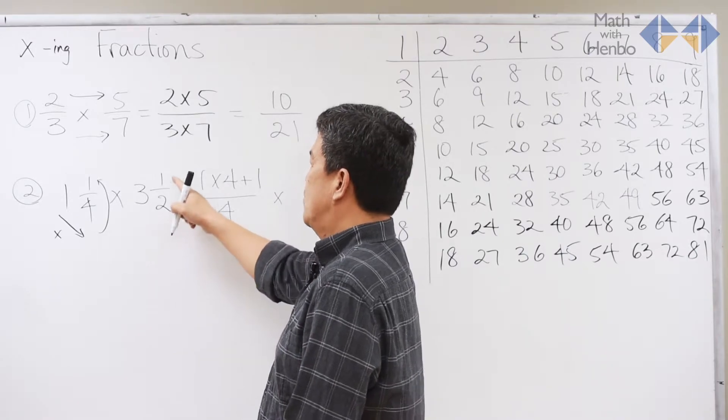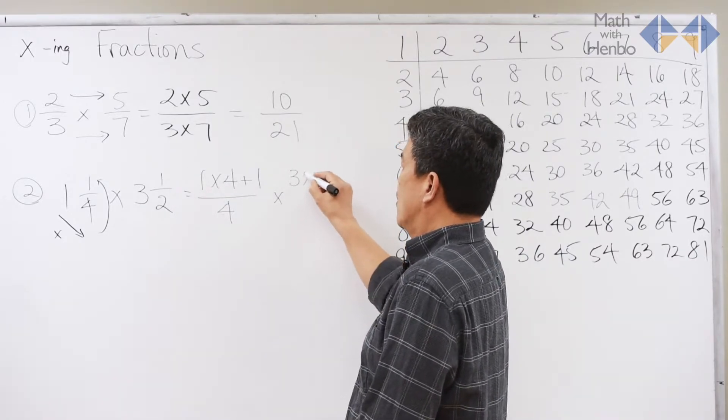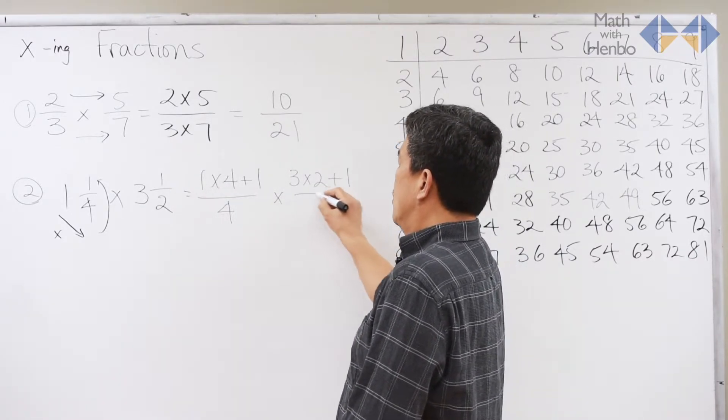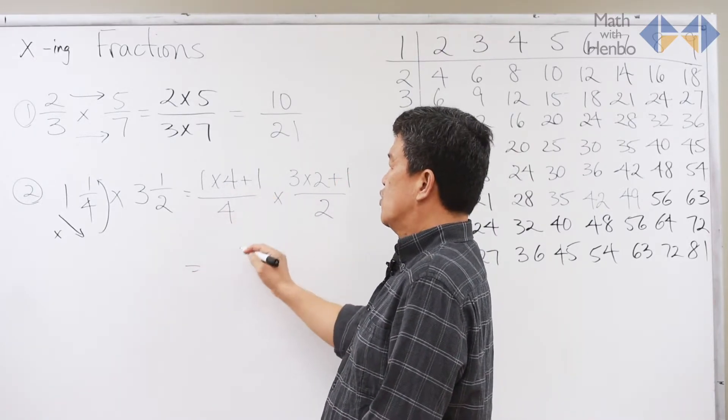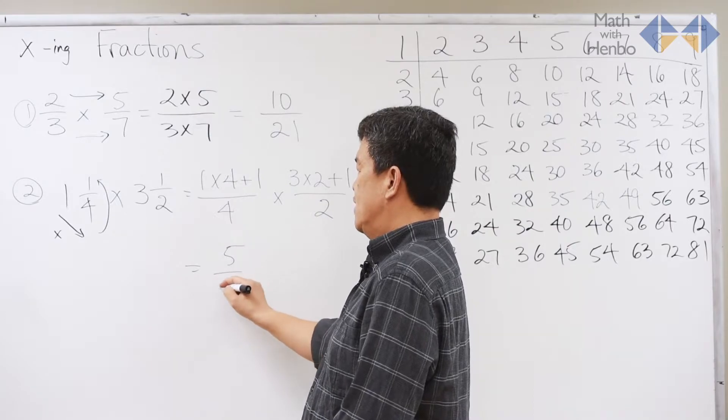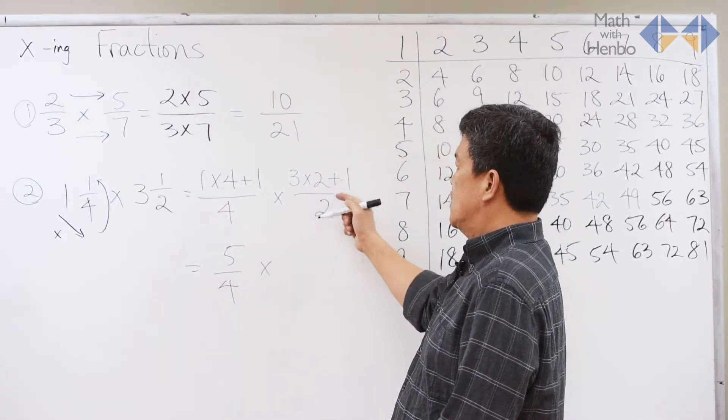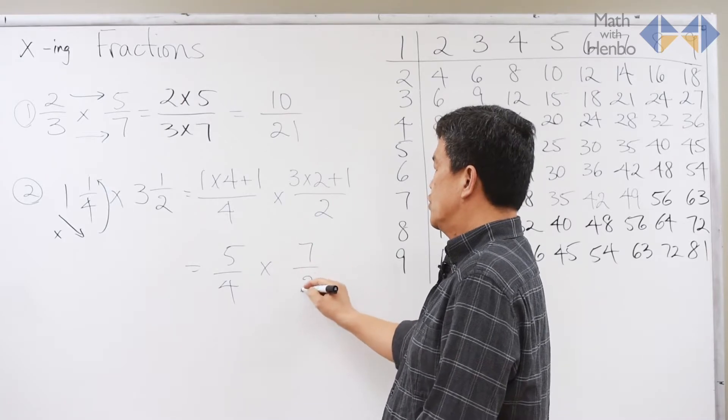Times 3 times 2 plus 1. So, let me write it here. Over 2. At this point, 1 times 4 is 4. Plus 1 is 5. And then that's 5 fourths. Times 6 plus 1 is 7. Over 2.